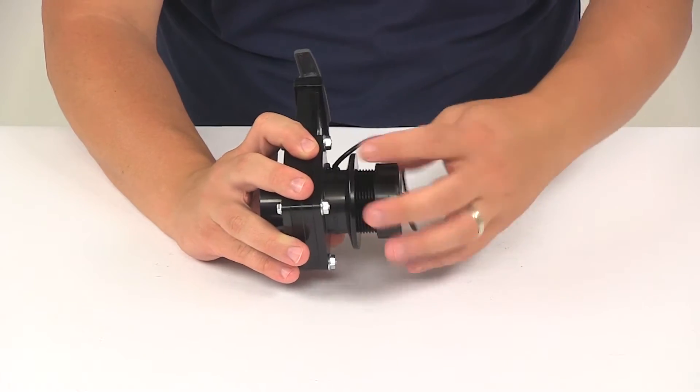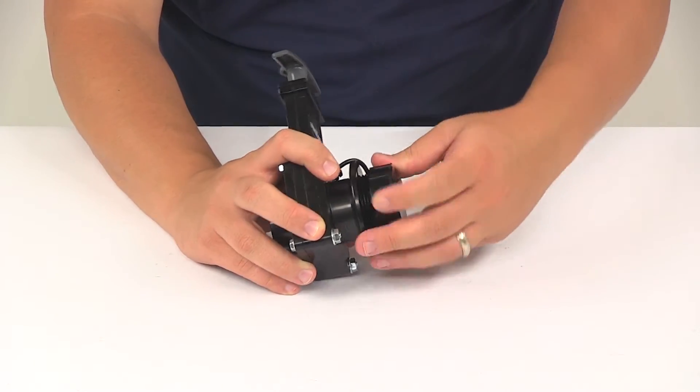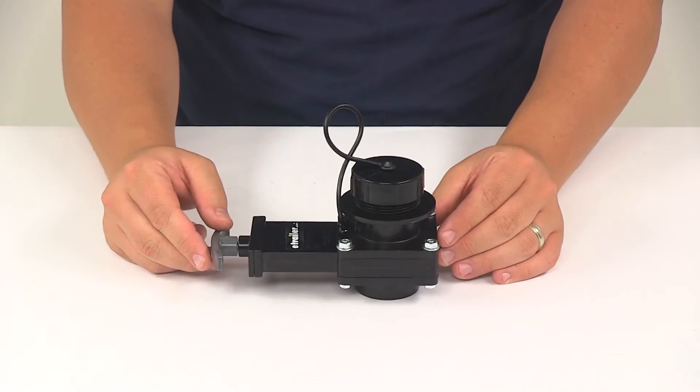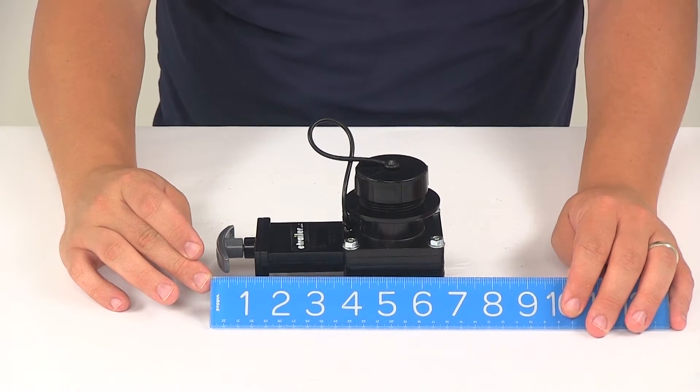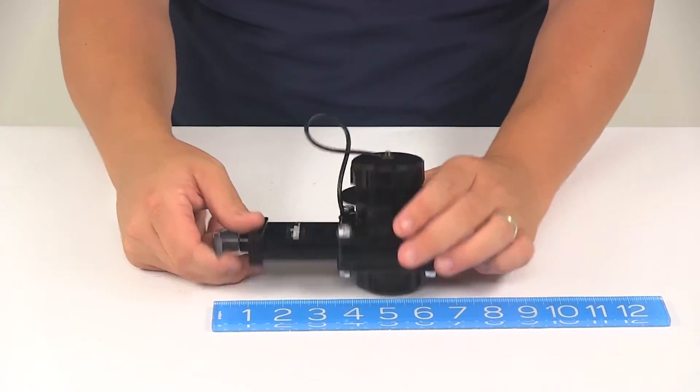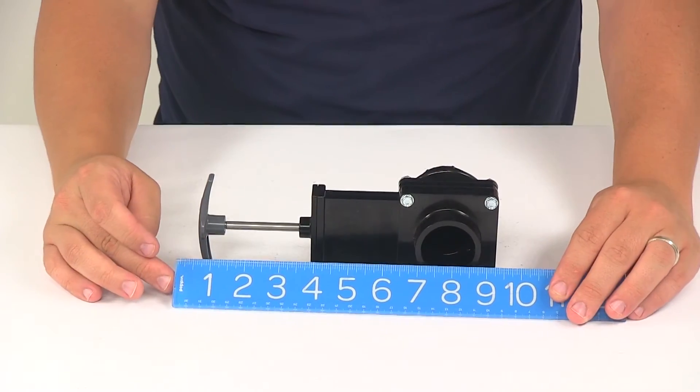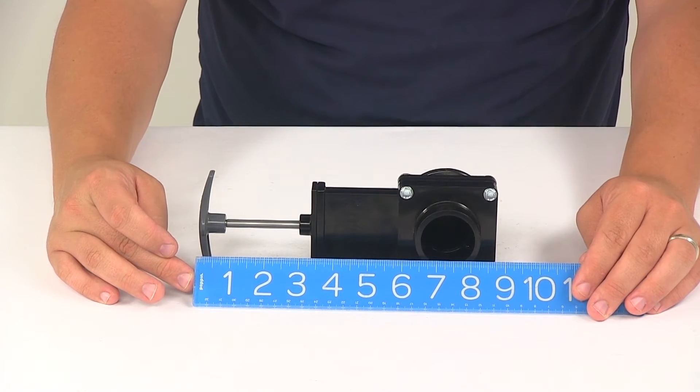Go ahead and put the cap back on. And then we can go over a few more measurements. I'm going to give you a length measurement with the handle in the closed position. That's going to give us a measurement of about six and three quarters of an inch. And then if we extend that out and do that same measurement, we're looking at about eight and three quarters of an inch.